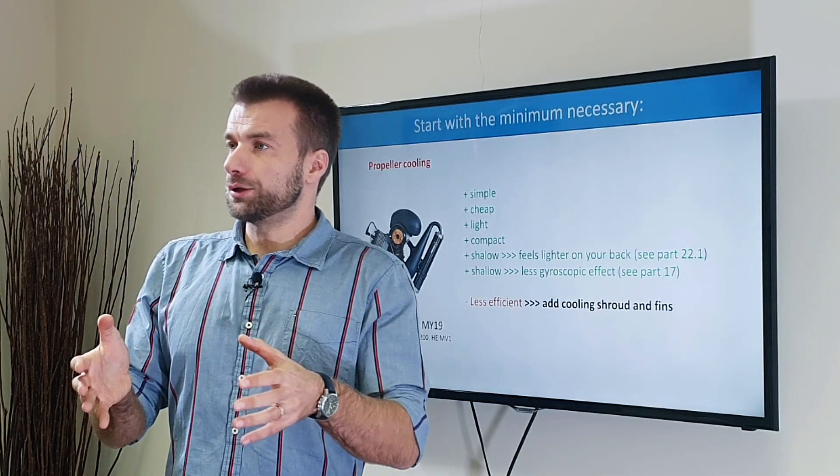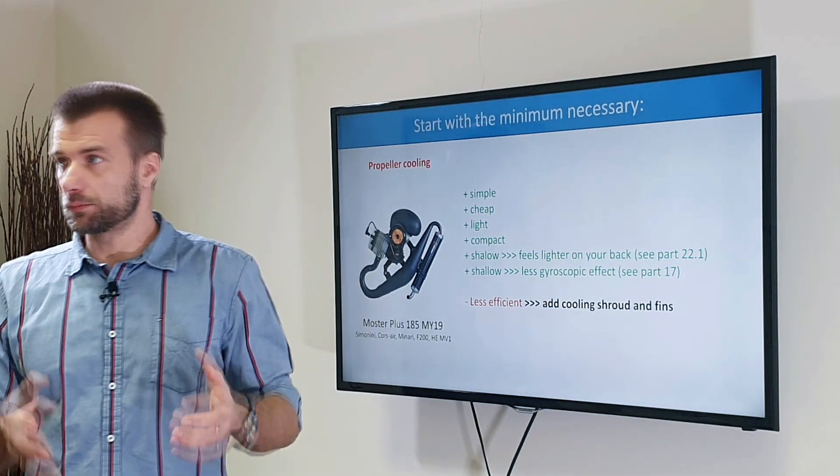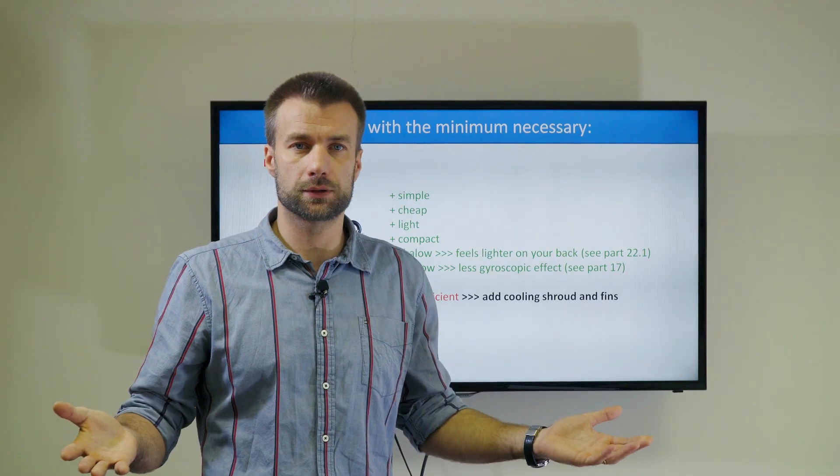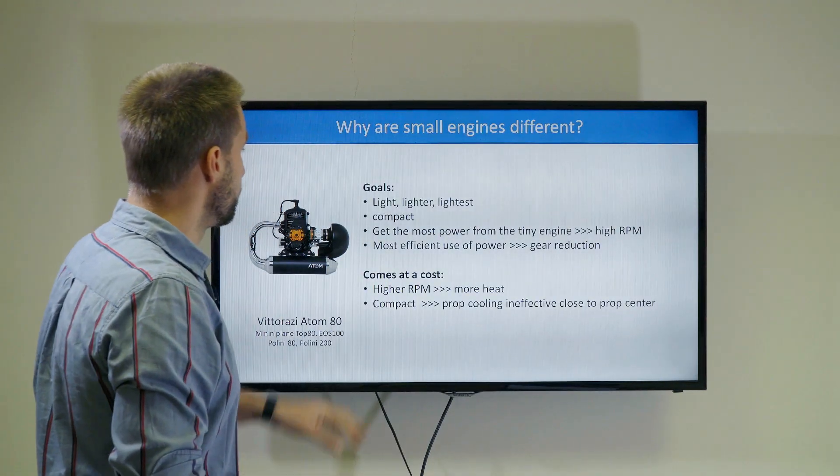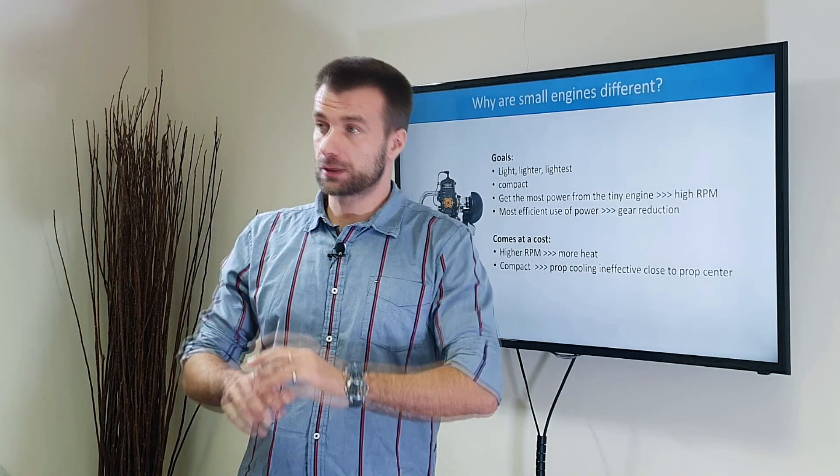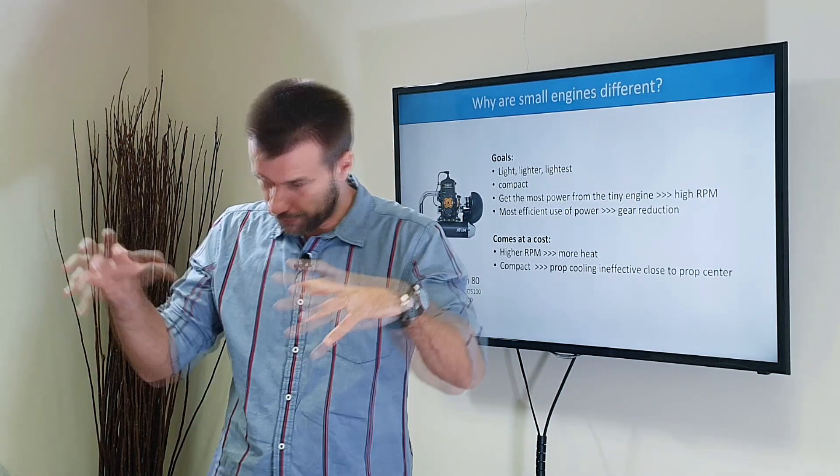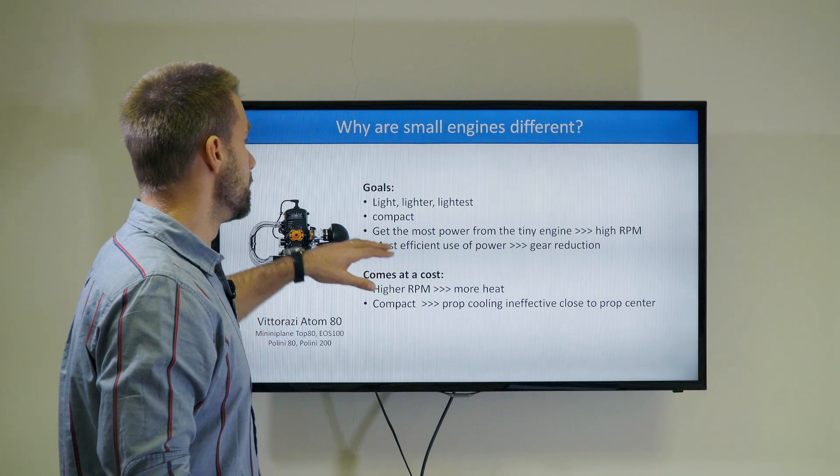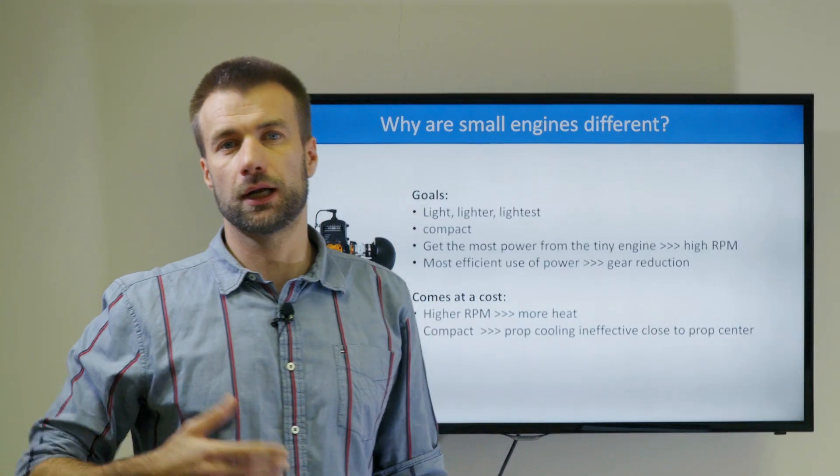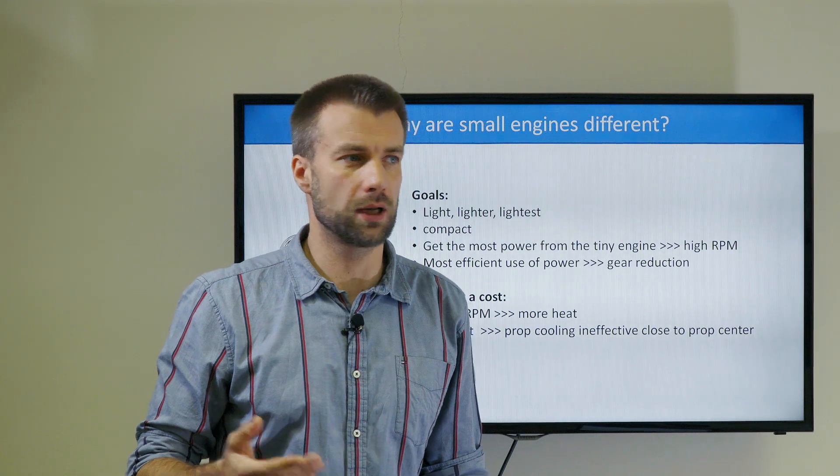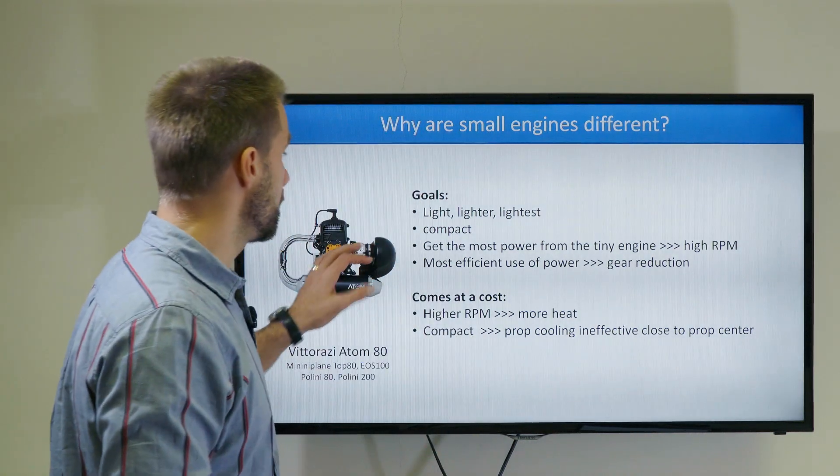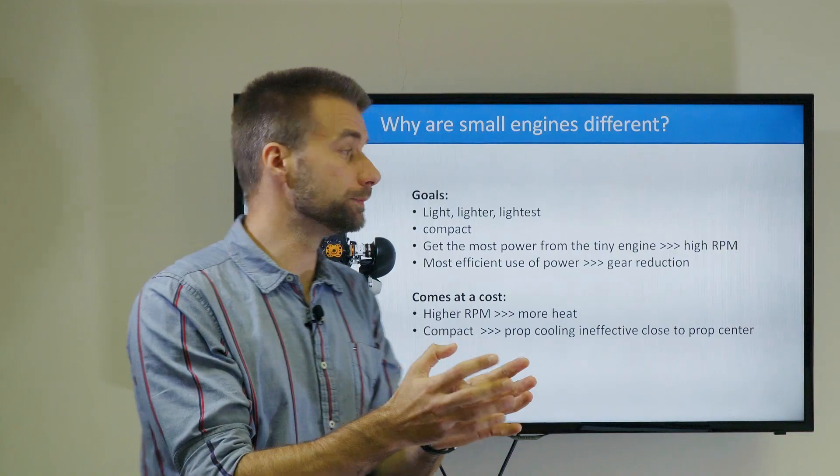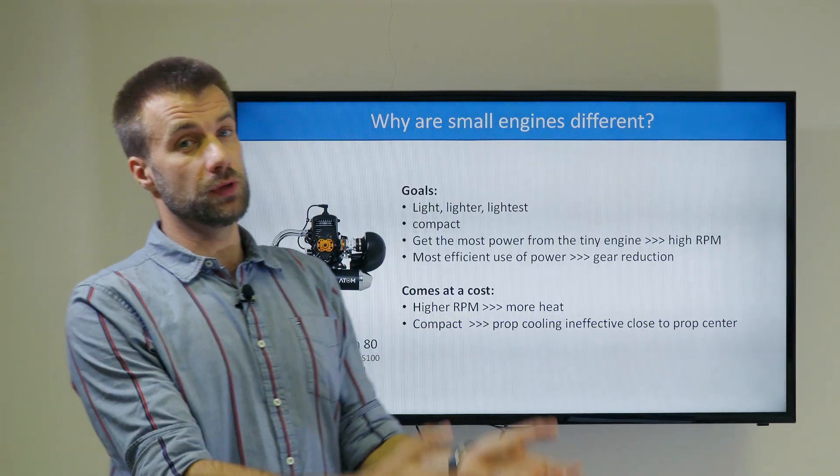Why do we see that small engines don't have this cooling system? Small engines, I'm talking about 80cc and 100cc engines, they have forced cooling. Why are they different? There are numerous reasons. First let's set the goals for a small engine: light, lighter, and lightest. That's the point. They want them to be compact and light, but most pilots that fly a Top 80 or Atom 80 engine are super happy with those engines but have never said 'I don't wish for more power.' So the designer wants to squeeze the most juice of that limited cc engine.